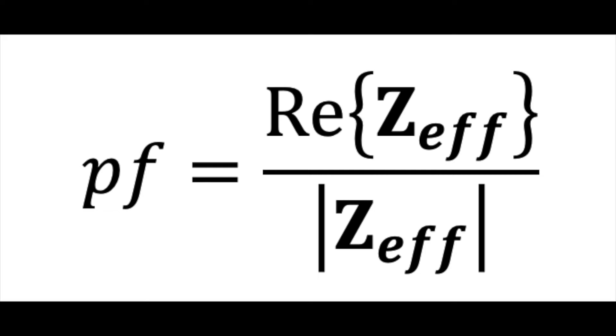If we're really lucky we could probably have both the real component and the magnitude equal, and then we get a power factor of 1, but the chances of that are pretty slim.